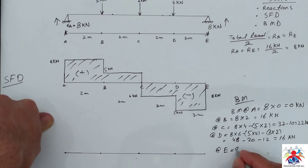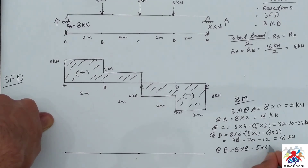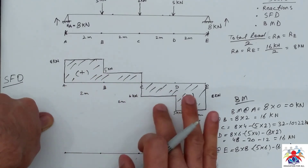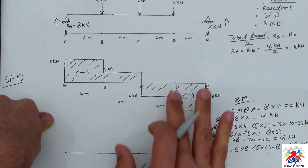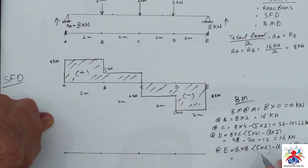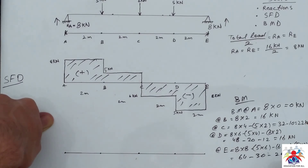Bending moment at point E: 8 multiplied by 8, minus 5 multiplied by 6, minus 6 multiplied by 4, minus 5 multiplied by 2. That gives 64 minus 30 minus 24 minus 10, which equals zero kilonewton·meters.